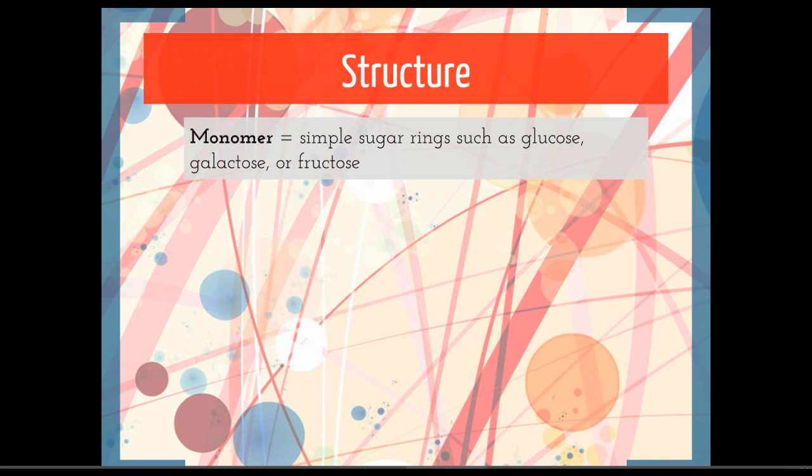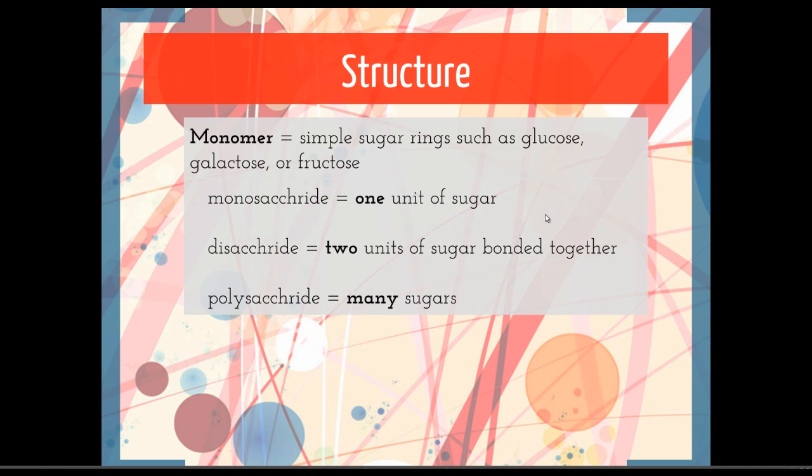So the monomer of a carbohydrate is a simple sugar ring, such as glucose, galactose, or fructose. When you build a carbohydrate, you're going to take a series of these rings and put them together. If you just have one ring of sugar, we call it a monosaccharide.